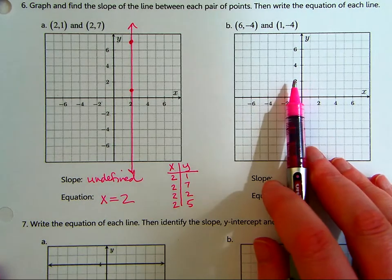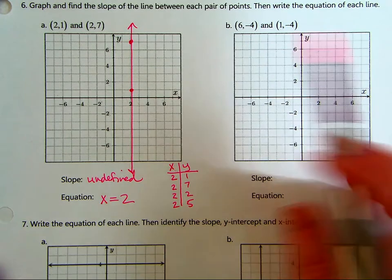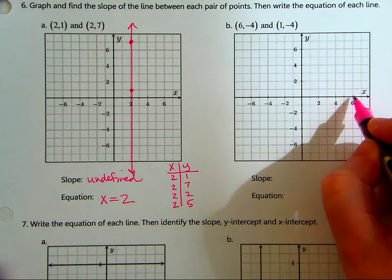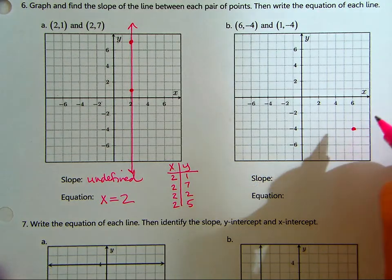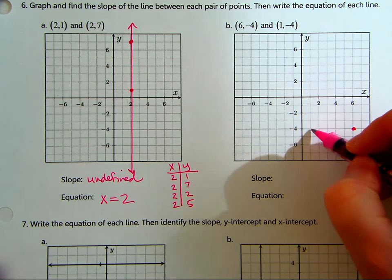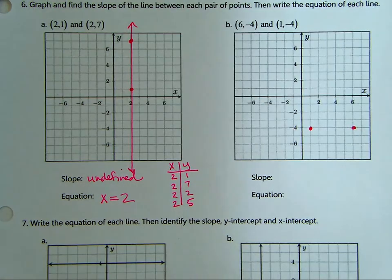Now, b is the reverse of that. So we've got (6, -4). Let's see where that is. 6, negative 4. And 1, negative 4. So those line up horizontally because they have the same y value.